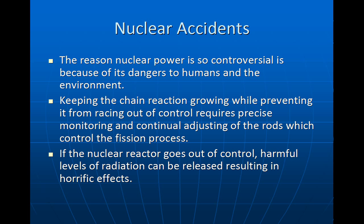Nuclear accidents are a key reason why nuclear power is so controversial — because of its dangers to humans and the environment. Keeping the chain reaction growing while preventing it from racing out of control requires precise monitoring and continual adjusting of the control rods, which collect the neutrons and control the fission process. If those rods are damaged, or any part of the nuclear reactor is damaged and they cannot control the reaction, it's going to spin out of control, giving off harmful levels of radiation and resulting in horrific effects. This is really what happened in Chernobyl.